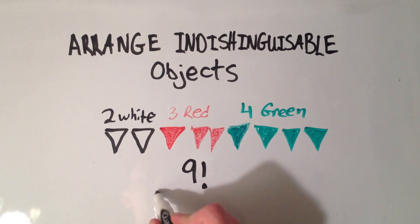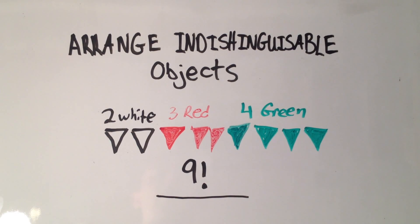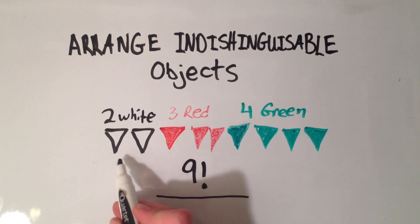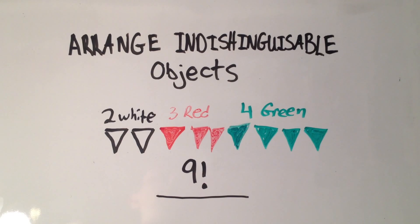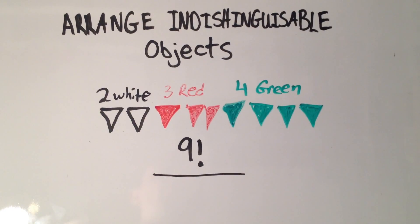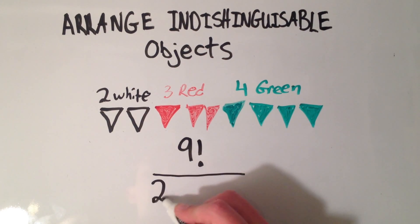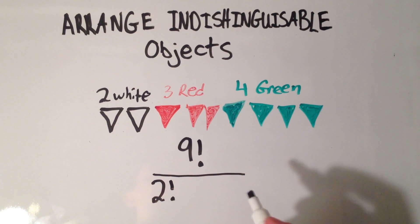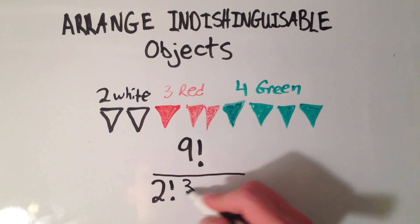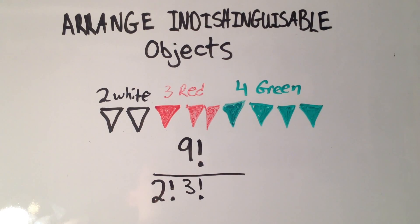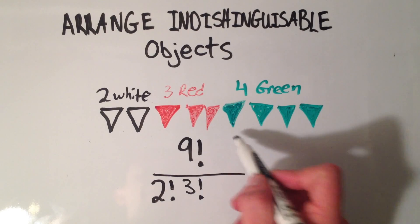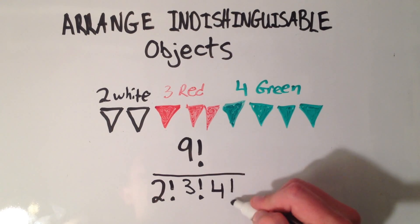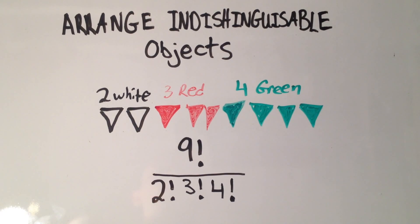So what we do now is divide by the number of indistinguishable objects. I have two white flags that are indistinguishable, so I'm going to divide by two factorial. There are three red flags that are indistinguishable, so I'm going to divide by another three factorial. And I have four green flags that are indistinguishable, so I'm dividing by four factorial. And that would be your answer.